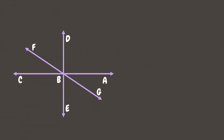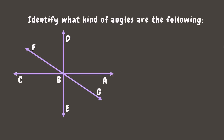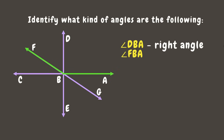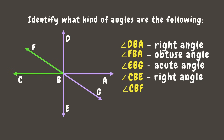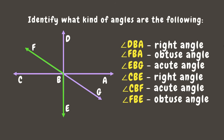Now let's try this activity. Can you identify what kind of angles the following are? Angle DBA is a right angle. Angle FBA is an obtuse angle. Angle EBJ — if your answer is acute angle, that is right. Angle CBE is a right angle. Angle CBF — if your answer is an acute angle, that is right. And finally, angle FBE is an obtuse angle. Wonderful!